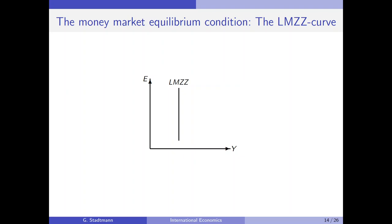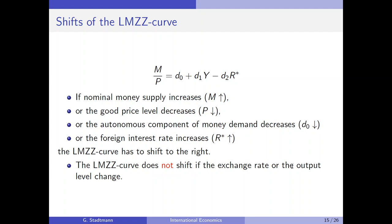This is displayed on slide number 14. The LMZZ curve shifts to the right if nominal money supply increases, if goods prices decrease, if the autonomous component of money demand D0 decreases, or if the foreign interest rate R* increases. The LMZZ curve does not shift if the exchange rate or the output level change, because those two variables are displayed on the axes — changes in those variables mean we move along the same LMZZ curve.